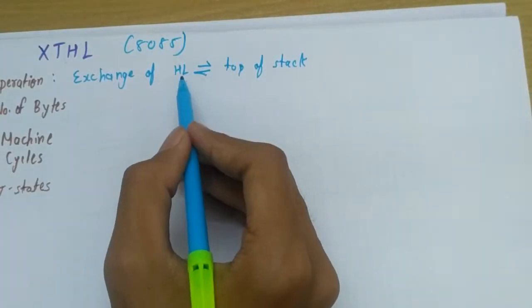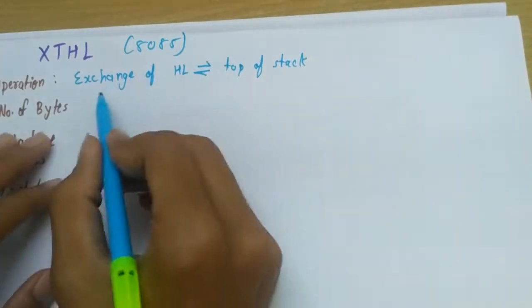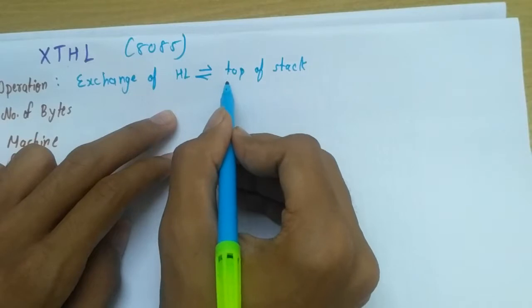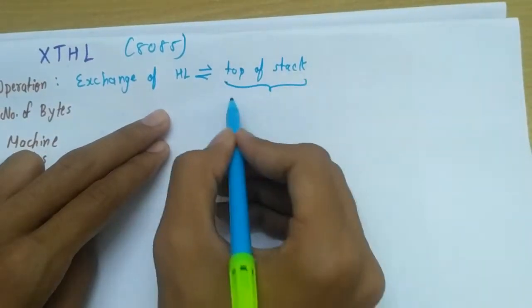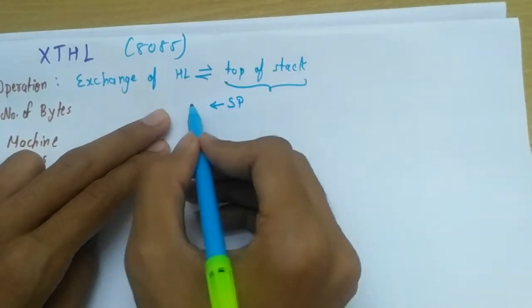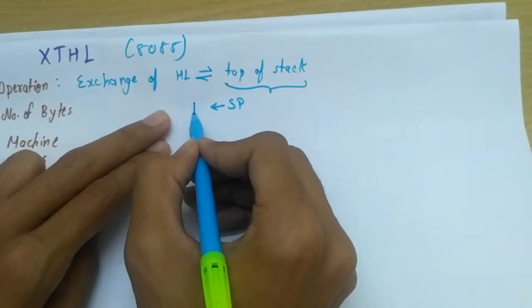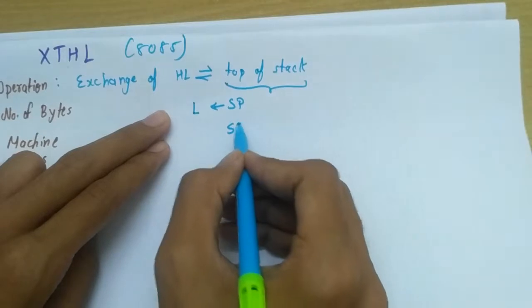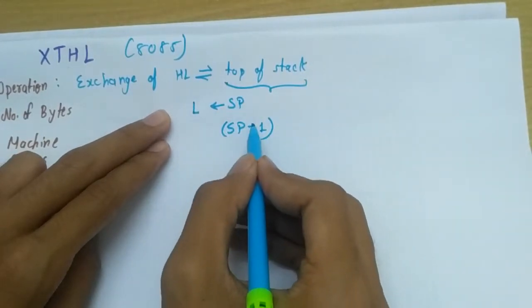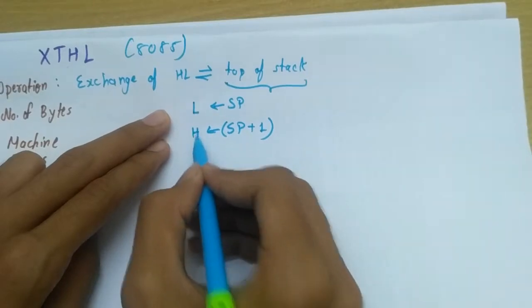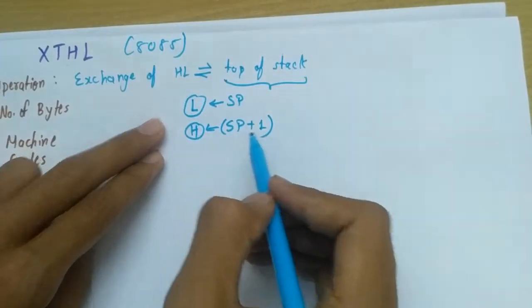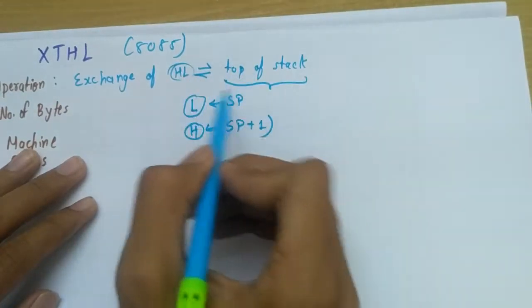Moreover, the address which is specified by stack pointer initially - the data at that address will move to register L, whereas data at SP plus one, that is the address plus one, will move to register H, since H is higher order and L is lower order in the HL register pair.